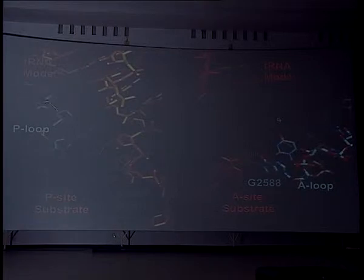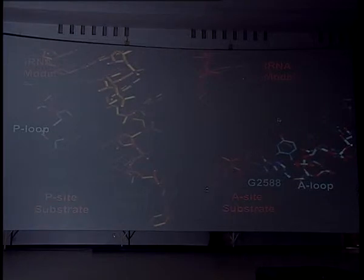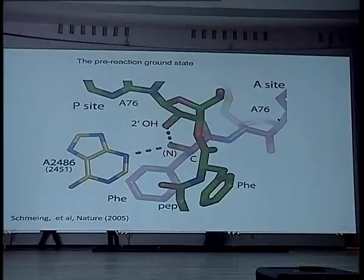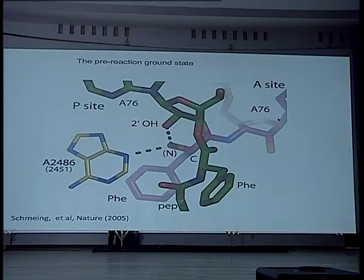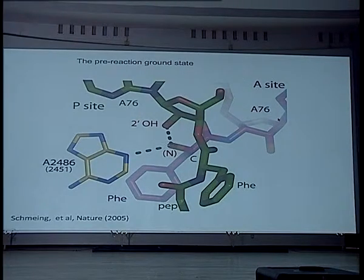What we found is the CCA is interacting with a part of the ribosome RNA here, positioning the peptidyl group, and here's the CCA interacting with the RNA on the ribosome with the amino acid to attack it. After many, many structures, what Martin concluded is that at the beginning of this process of peptide bond formation, the alpha-amino group on the amino acid attached to the A-site tRNA is positioned to attack the carbonyl carbon of the peptidyl tRNA to form the peptide bond.